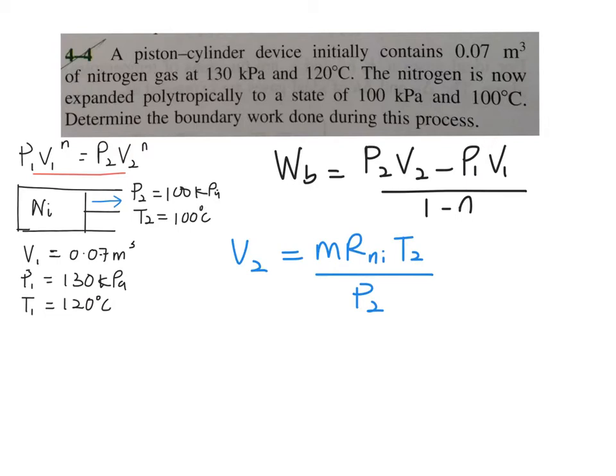Now as you can see, your mass value is not given. So how are you going to obtain your M? We can make use of the information that you have in state 1. We rearrange the ideal gas equation again, so you have M is equal to your P1 V1 over your R nitrogen at temperature 1. So since this is a closed system, basically your mass is constant for the initial and final states.